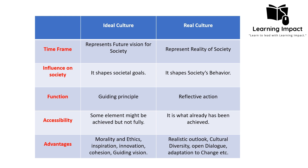Ideal culture serves as a guiding principle for society to move forward and achieve certain standards. While real culture is a reflective action performed by the people of society in their current situation. Regarding accessibility, some elements of ideal culture might be achieved, but it is not possible to achieve it fully — it sets perfect standards. Some parts of it can be achieved, and real culture reflects what has already been achieved.